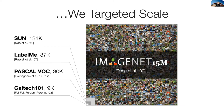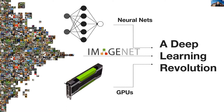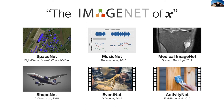The motivation was to endow machine learning models with enough data so that we could train high-capacity models with many parameters to capture the variability of diverse objects in this world. The combination of convolutional neural network models, powerful parallel computing chips like GPUs, and ImageNet set off a new era. Since then, datasets have been created in different areas following the spirit of ImageNet, including ShapeNet, MusicNet, SpaceNet, Medical ImageNet, EventNet, ActivityNet, and more.